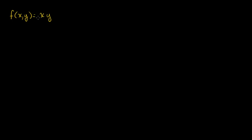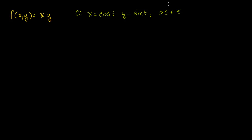Let's say that we have a path in the xy plane, or a curve in the xy plane. I'm going to define my curve. Let's say my curve is going to be defined by x being equal to cosine of t, and y being equal to sine of t. We're going to go from t is equal to 0, or t is greater than or equal to 0, and less than or equal to pi over 2. If this was degrees, that would be 90 degrees. So that's our curve.